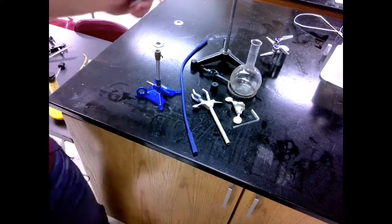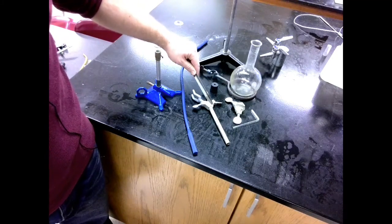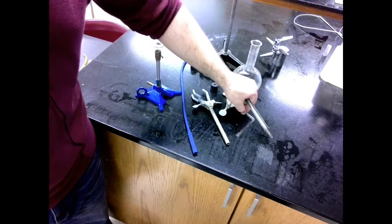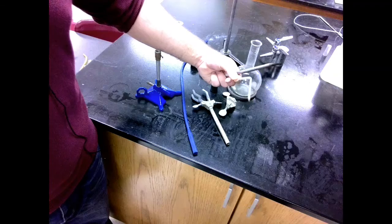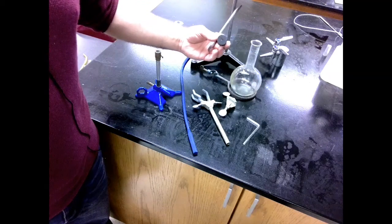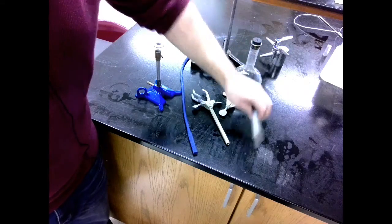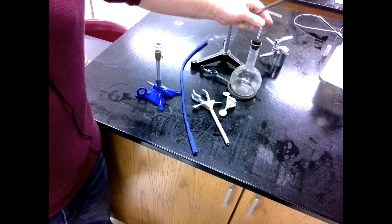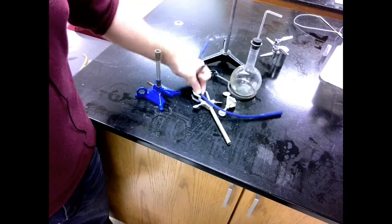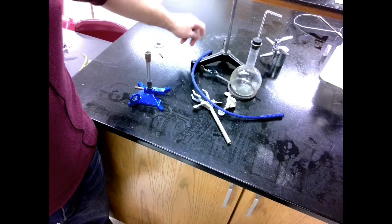In order to produce this steam, I need a Florence flask, a ring, a clamp, a clamp holder, a glass tube with an L-bend in it, a stopper with a hole that will fit both in this Erlenmeyer flask and fit this glass tube, a gas line, Bunsen burner, and an extra sturdy ring stand.